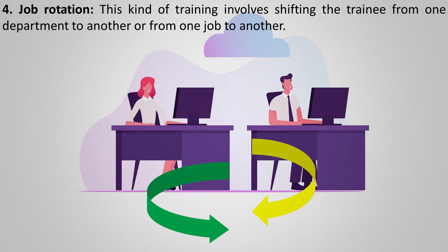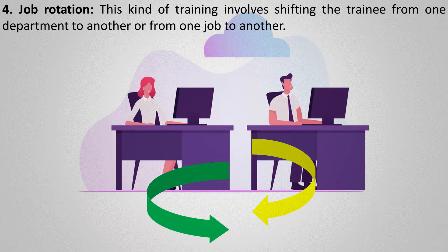The next method is job rotation. This kind of training involves shifting employees from one department to another, or from one job to another. This helps the trainee gain broad knowledge and understanding of all parts of a business and the overall function of the organization. Job rotation also allows trainees to interact with more employees, helping future cooperation among departments.